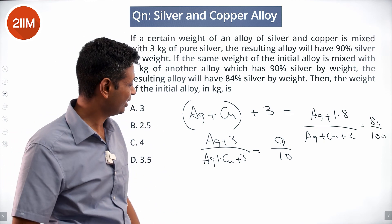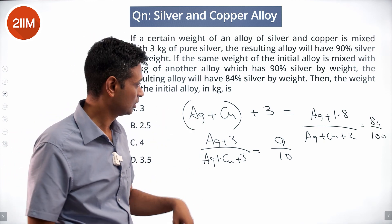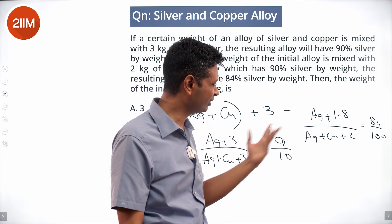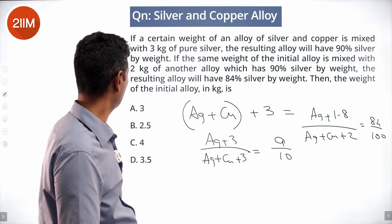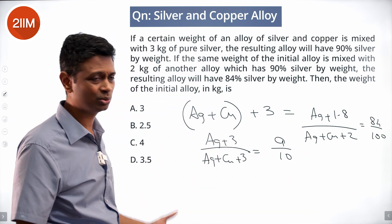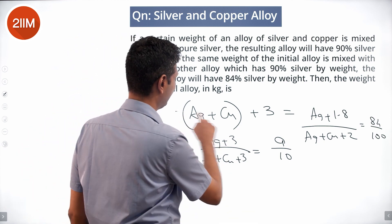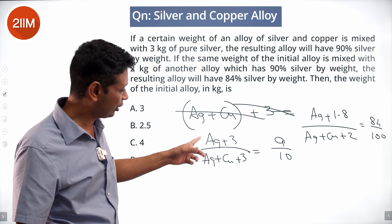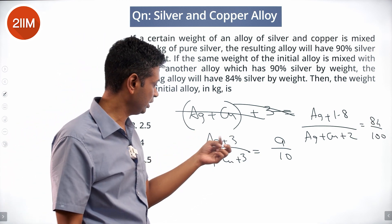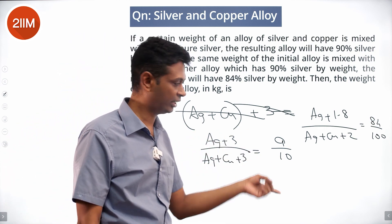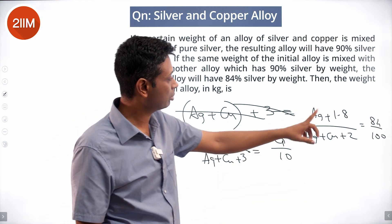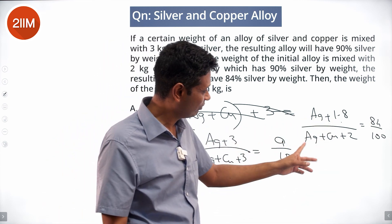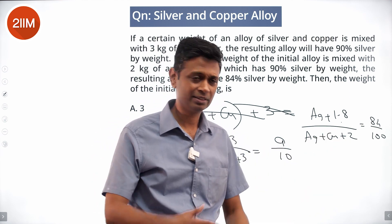What we are doing effectively is calculating silver by total. Silver by total is 9 by 10 for the first case, and 84 by 100 for the second. If we solve these two equations we should get the silver and copper content of the initial alloy. So: weight of silver in alloy plus 3, divided by weight of alloy plus 3, equals 9 by 10. And weight of silver plus 1.8 — because 90% of 2 kg is 1.8 — divided by weight of alloy plus 2, equals 84 by 100.